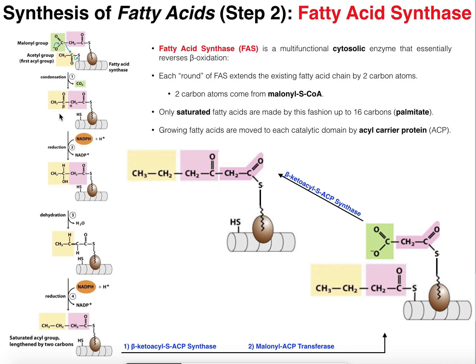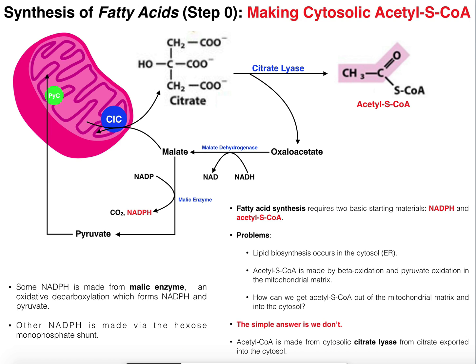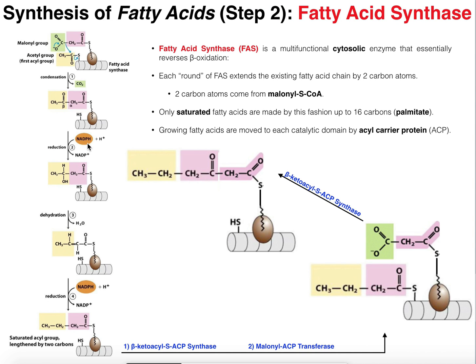We just condensed with loss of CO₂ to get a four-carbon fragment. Now we're going to reduce this beta carbonyl. In some ways you could call this process beta reduction, because instead of beta-oxidation, we're doing the reverse. This carbonyl is going to be reduced to an alcohol. The electrons to perform this reduction are from NADPH — either from malic enzyme or the hexose monophosphate shunt. So we reduce this carbonyl to an OH.